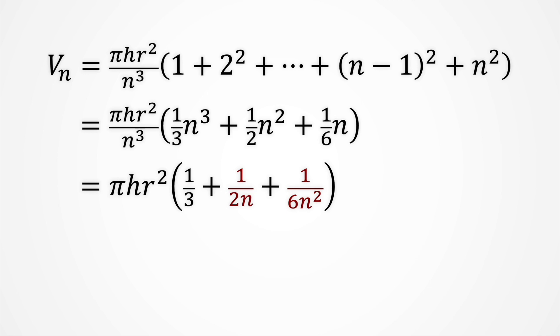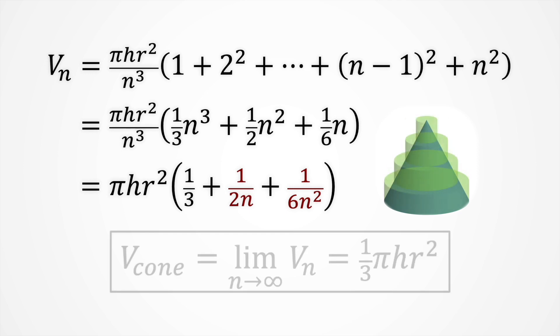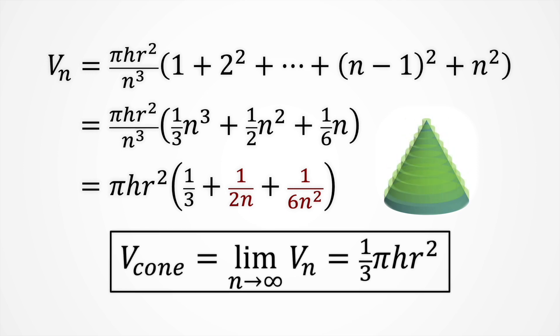And as n gets bigger and bigger, the red terms will drop off to 0. So we will end just with the formula we claim. Really cute.